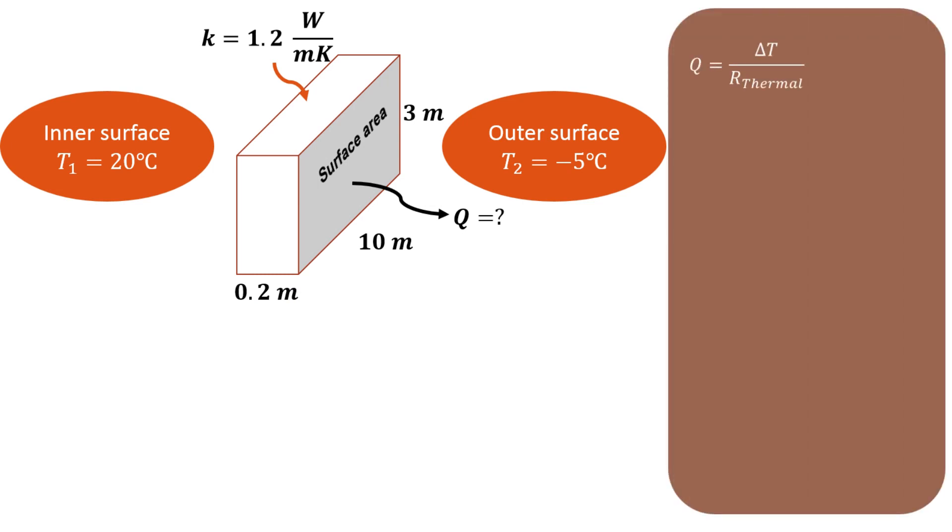As we derived earlier, Q equals change in temperature divided by thermal resistance. For a slab material, the thermal resistance is width divided by k times A, and ΔT is the temperature difference, which is the higher temperature minus the lower temperature.